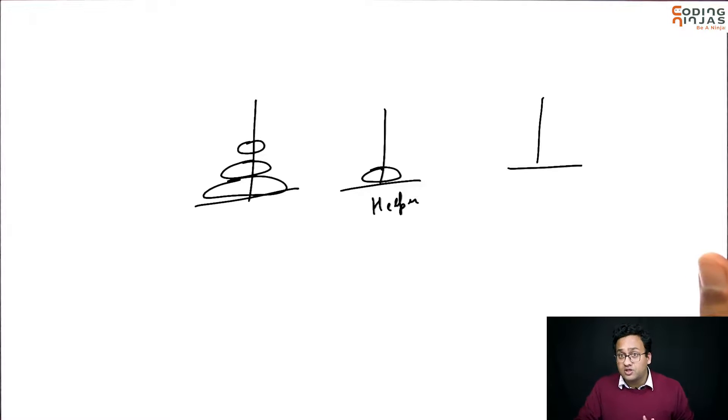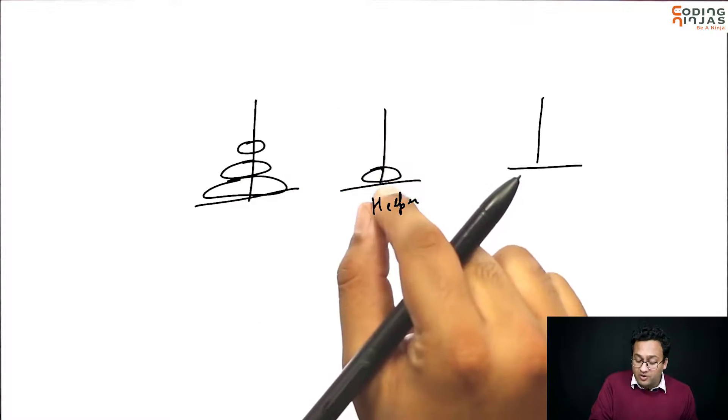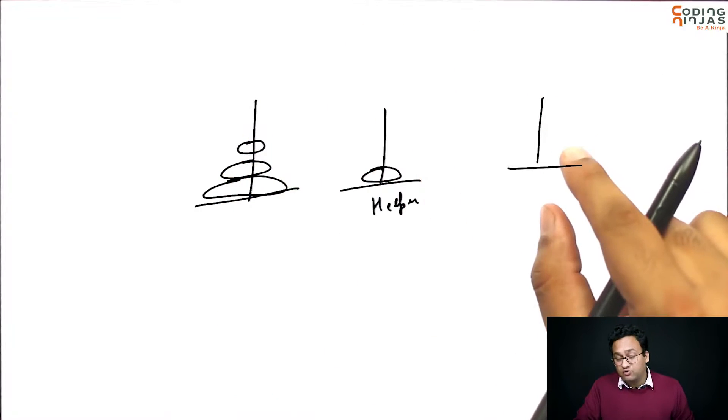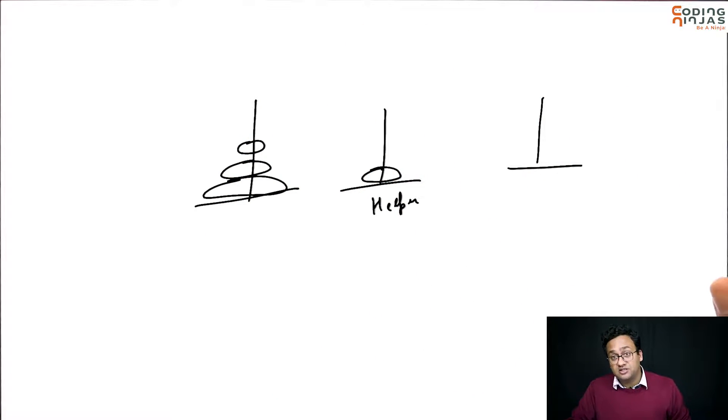What is the exact same problem? The exact same problem is that I can move n minus 1 to a destination using a helper as long as the helper is empty or I can consider it to be empty. So, this solution is not going to work. You cannot just move 1 to helper and then n minus 1 to destination and then 1 from helper to the destination. That is not going to work.